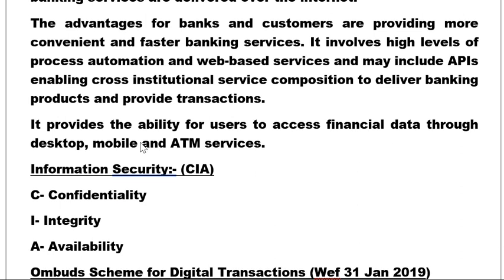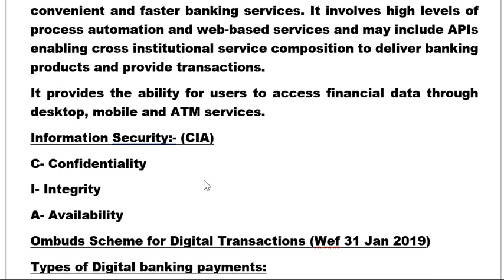For digital services, there has to be some information security. There are three components of information security, called CIA. CIA stands for Confidentiality, Integrity, and Availability. Confidentiality means the data should be confidential — it should not be open to the public.